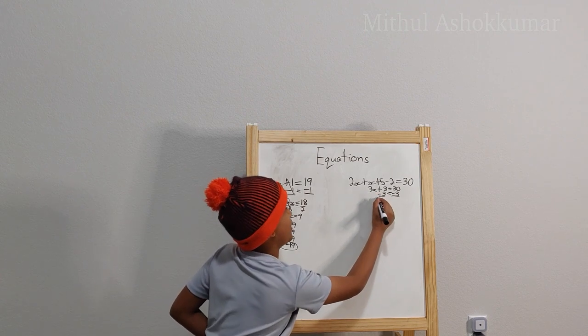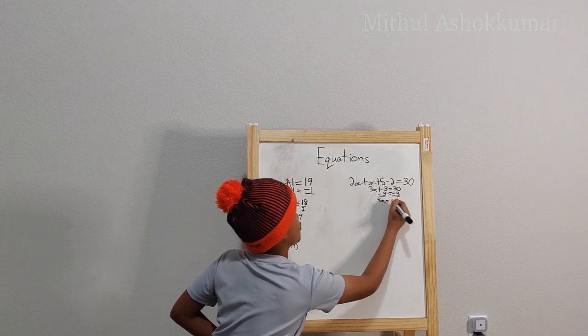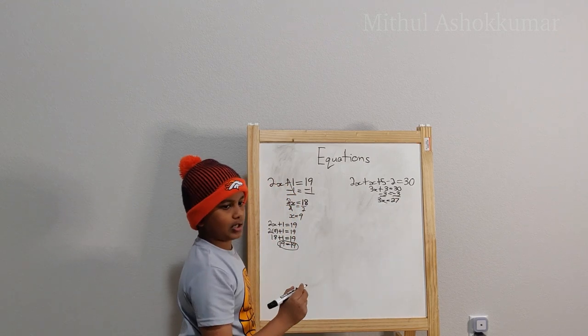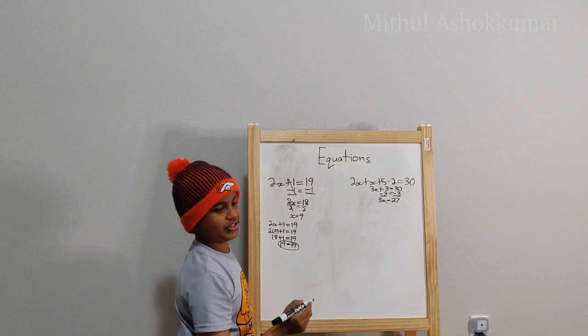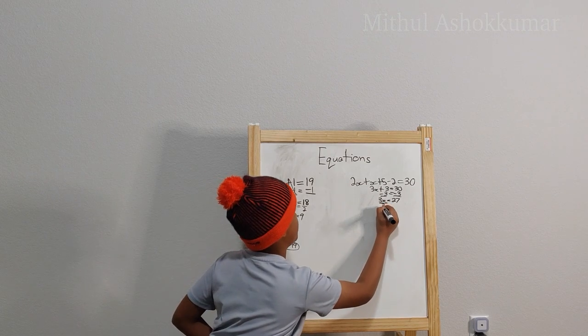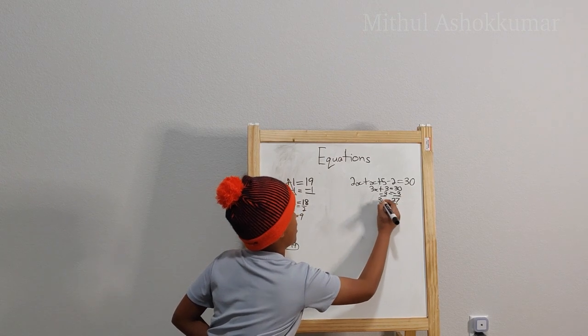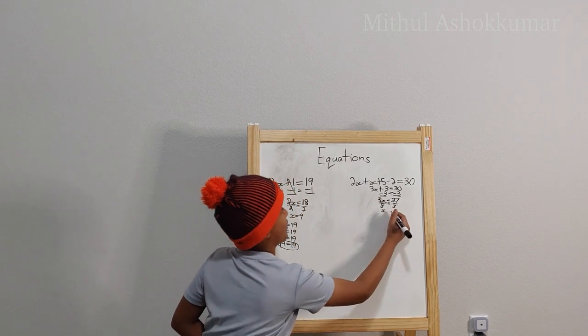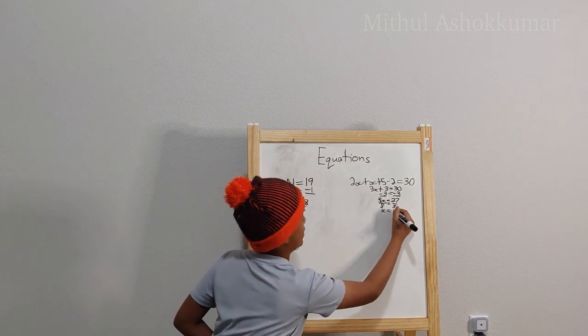And then on the left side we have 3x, on the other side we have 27. So then, how do I get x by itself? Easy. You can just divide both sides by 3. So on the left side we have just x and on the other side we have 9.